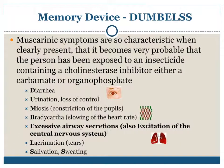Memory device: DUMBBELLS. Muscarinic symptoms are so characteristic that when clearly present, it becomes very probable that the person has been exposed to an insecticide containing a cholinesterase inhibitor, either a carbamate or organophosphate.